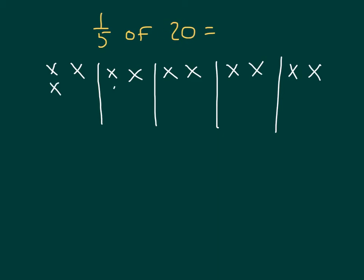11, 12, 13, 14, and 15, 16, 17, 18, 19, and 20. So within each of those groups is 4. So 1/5 of 20 is equal to 4.